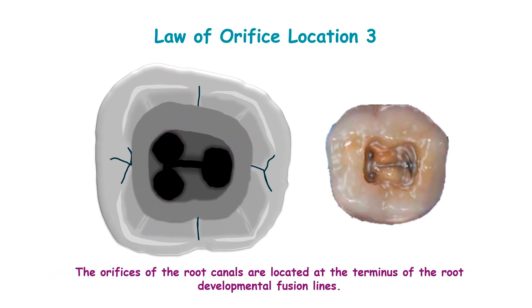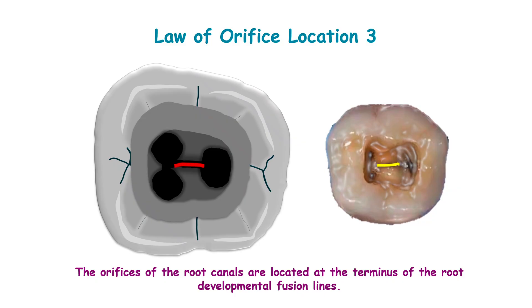Law of orifice location 3 states that the orifices of root canals are located at the terminus of the root developmental fusion lines. This line represents the developmental lines.